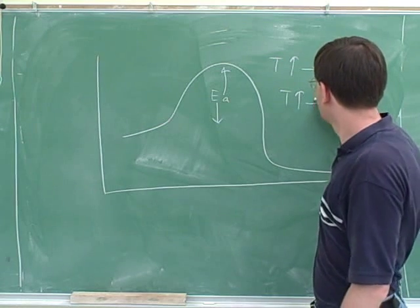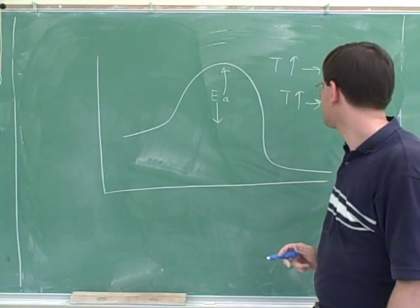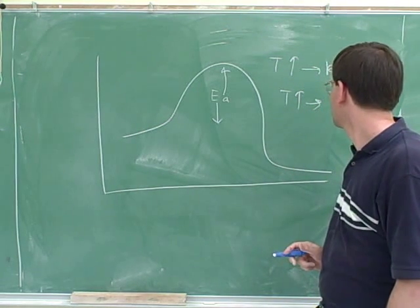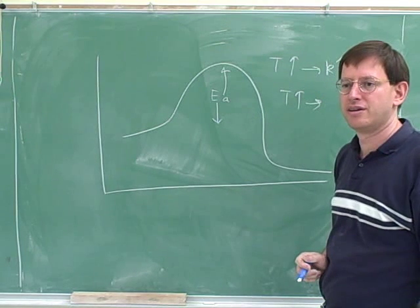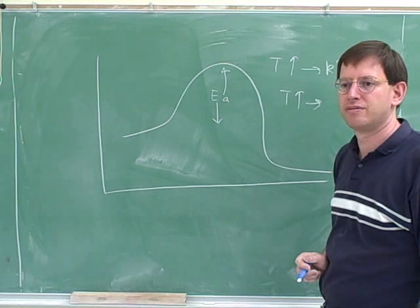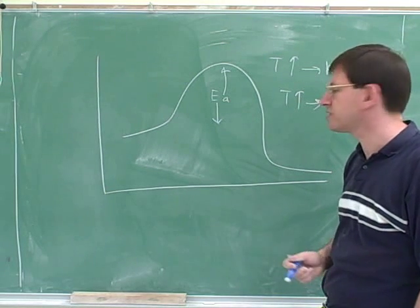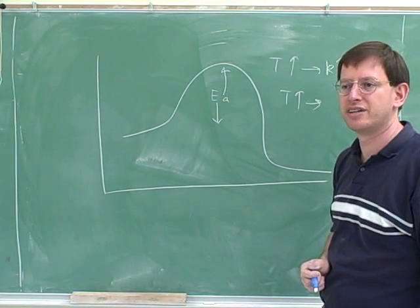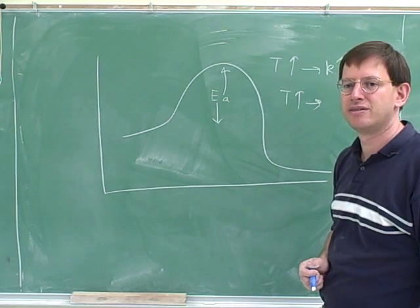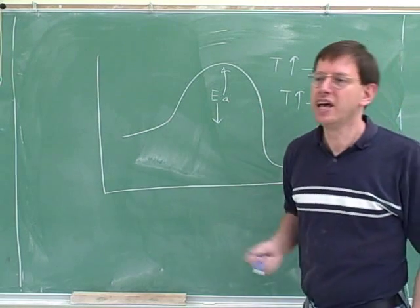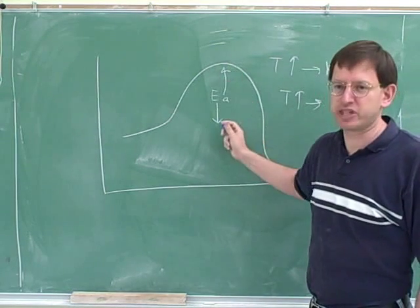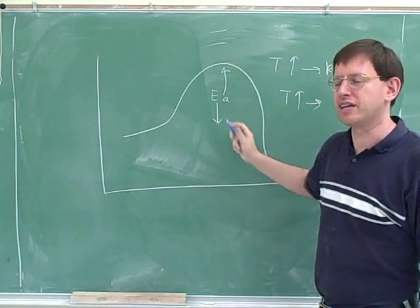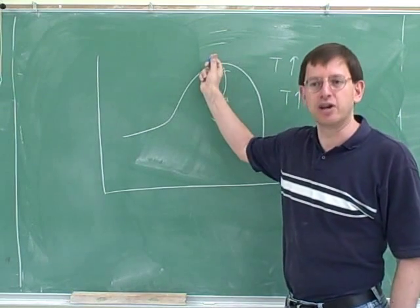If you increase the temperature, does that decrease the activation energy? Nope, those are two completely different things. That's not how it increases the rate. It doesn't increase the rate by making the hump smaller. It increases the rate by making it easier to get over the hump. That's a common type of trap on the test.